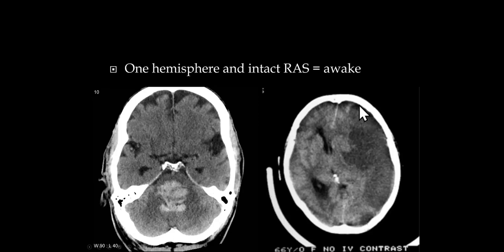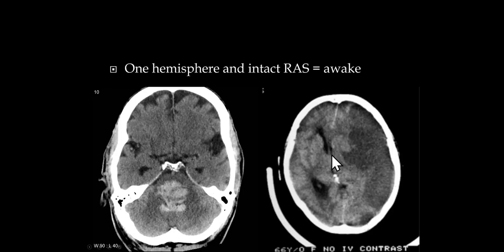Here's a patient with a large left middle cerebral artery stroke. If the stroke just involves one hemisphere and the other is normal, the patient will be awake. But in this case, there's a lot of swelling around the stroke, pushing the contents of the brain over to the opposite hemisphere — the left lateral ventricle is obliterated, the septum pellucidum is pushed way over to the right. So really both hemispheres are knocked out, even though technically the lesion is on the left, and the patient will be in a coma.